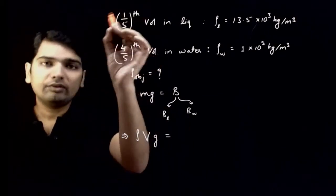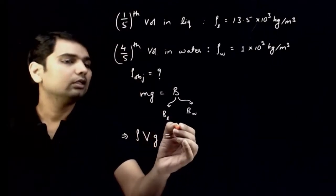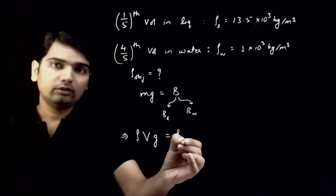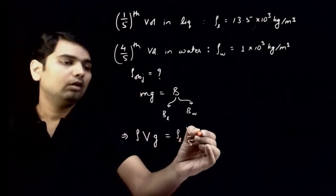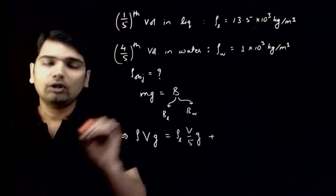Liquid of volume is one-fifth. So how much volume will be displaced? One-fifth volume will be displaced. So buoyant force of liquid is how much will it be? Density of liquid into volume displaced means V by 5 into g plus buoyant force of water.